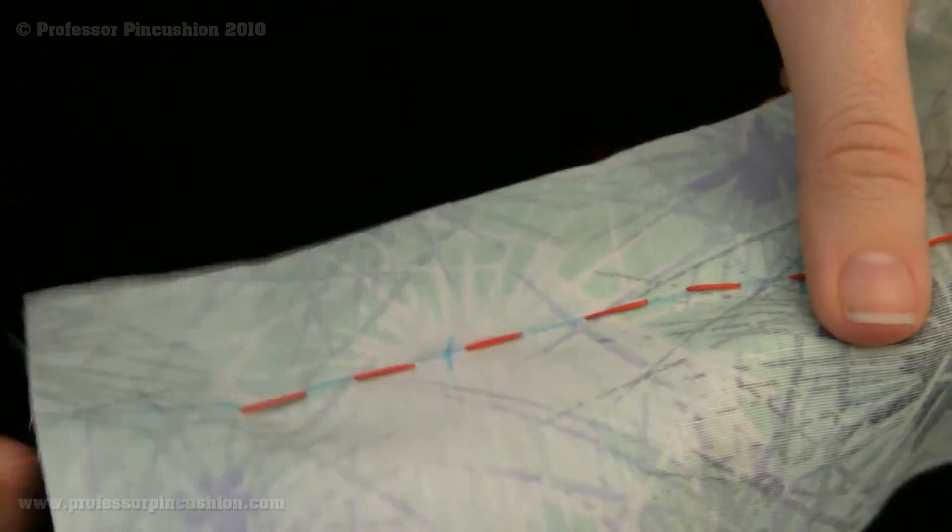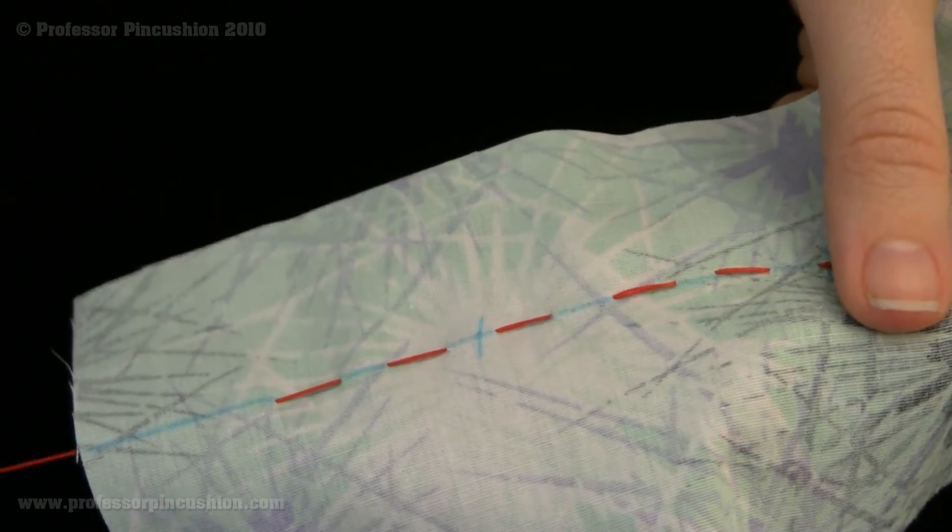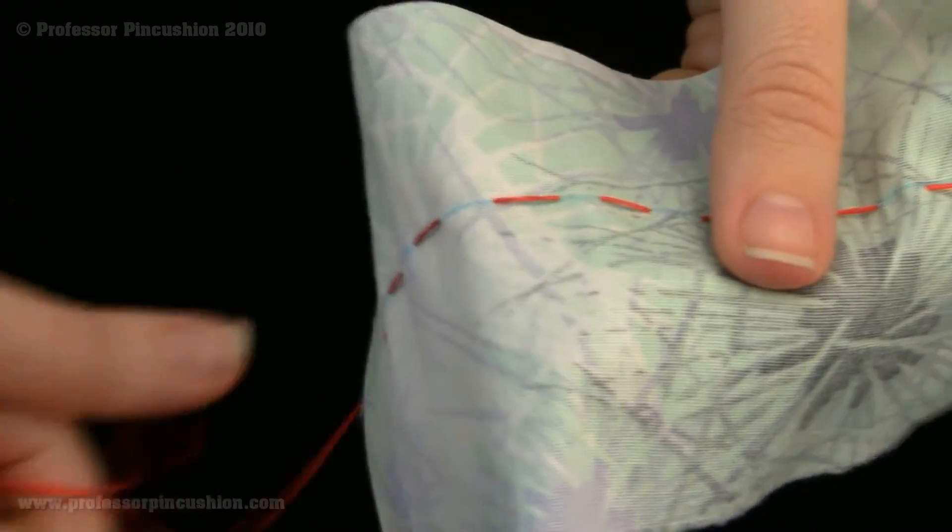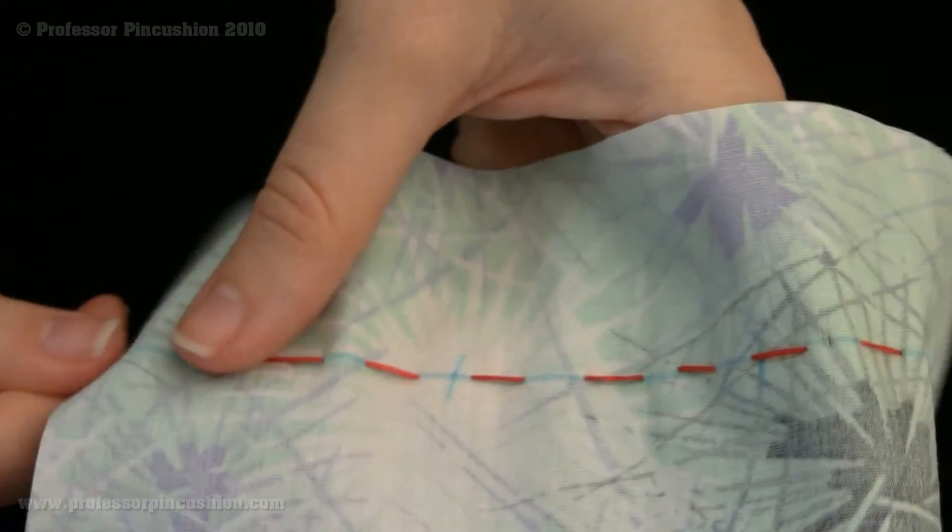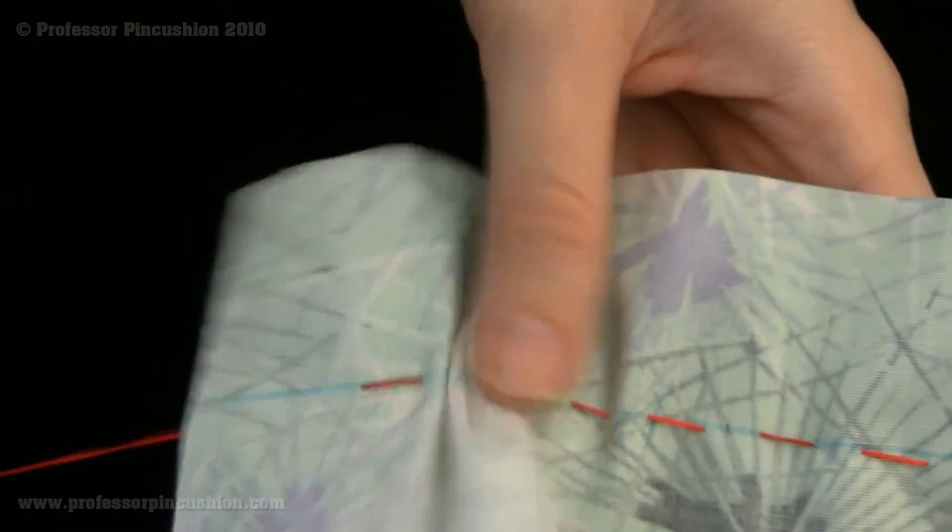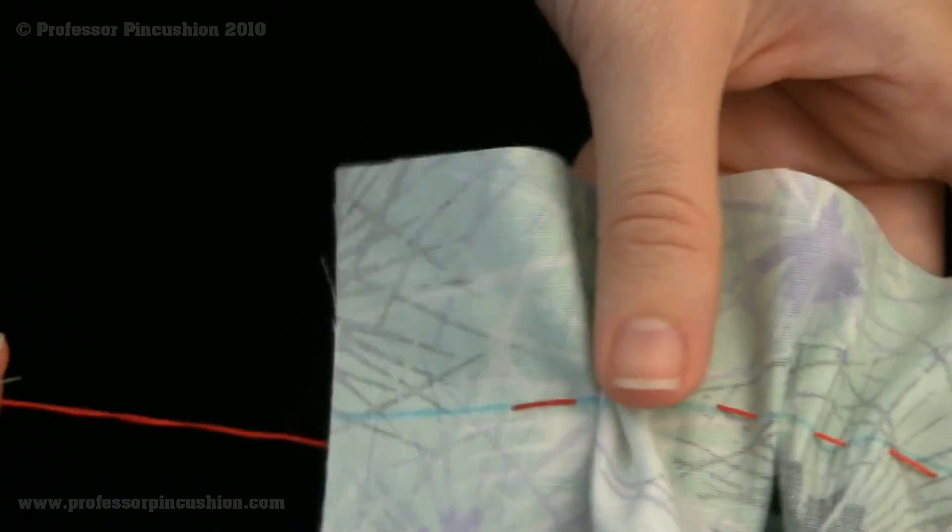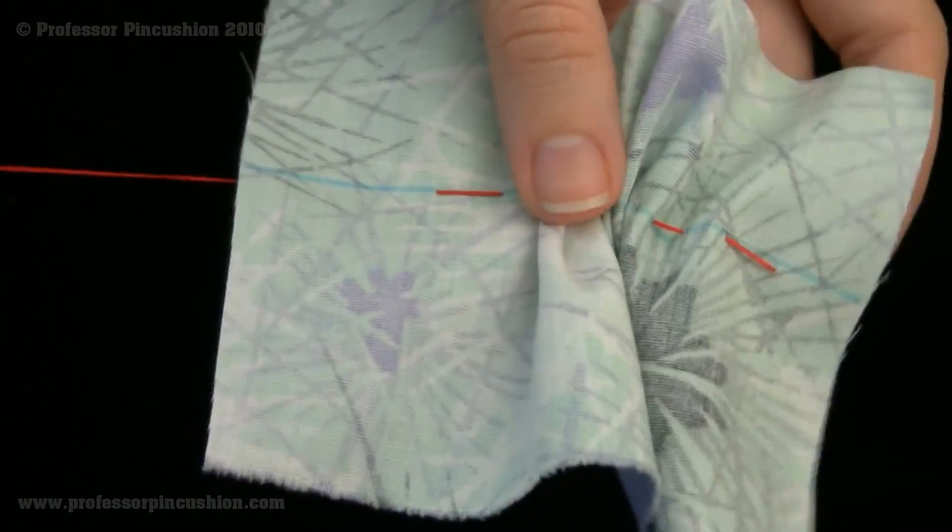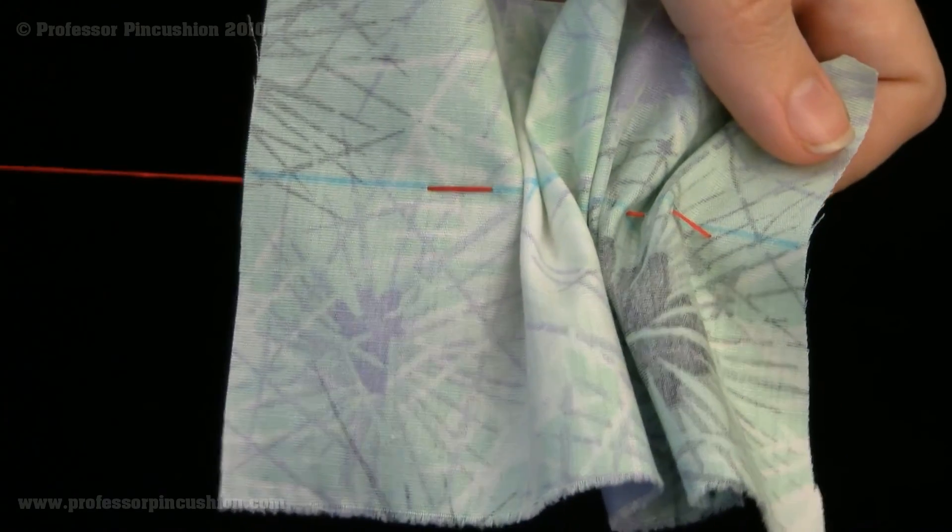The uniformity doesn't really matter if you're just doing a basting stitch because you're going to take it out anyways. But if I wanted to use this to create a ruffle or something like that, all I would need to do is just pull these stitches and see how it gathers up. So that's how you do a running stitch.